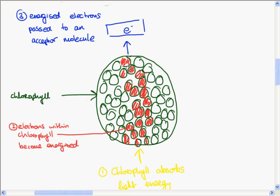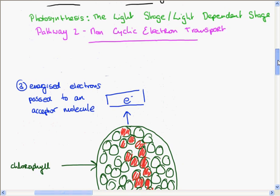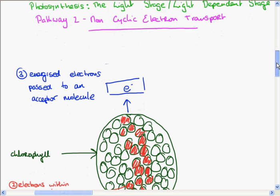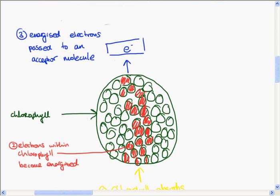The electrons are then passed to an acceptor molecule. Now, in pathway 1, in cyclic electron transport, we saw that the electrons were then passed along an electron transport chain and returned to chlorophyll. It was cyclic, and in the process, ATP was produced. This is pathway 2. This is non-cyclic electron transport. And something different is going to happen to the electrons in pathway 2.